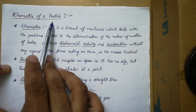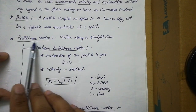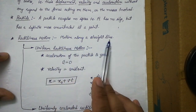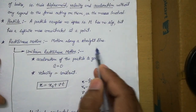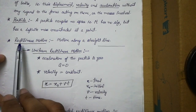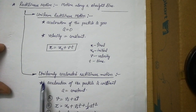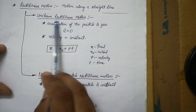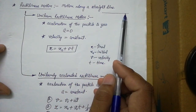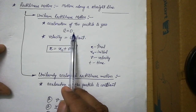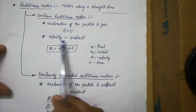In this topic, kinematics of particle, we are only dealing with rectilinear motion. Rectilinear motion is when a body or particle is moving along a straight line. Under rectilinear motion we cover two topics. The first is uniform rectilinear motion, where a particle moves along a straight line with zero acceleration, meaning the velocity of the particle is constant.